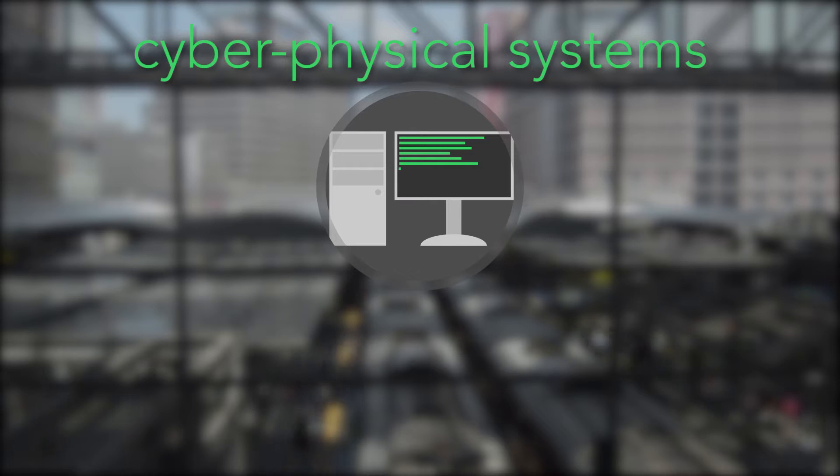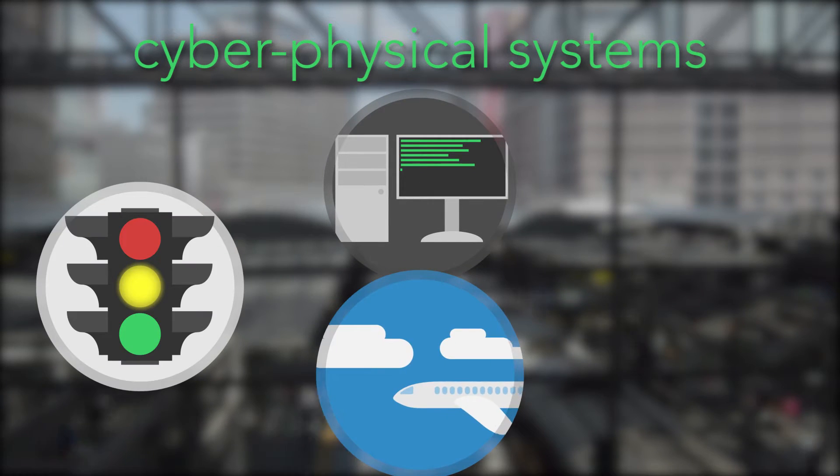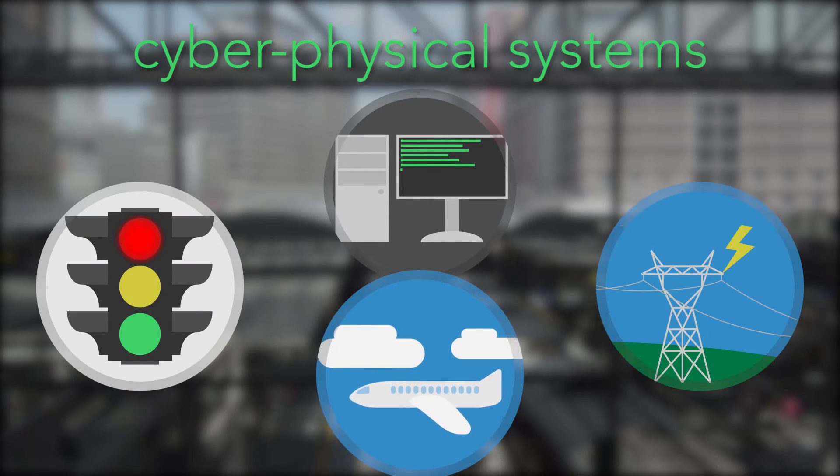Cyber-physical systems are real-world things controlled by computers, such as traffic lights, planes on autopilot, and the electricity grid.